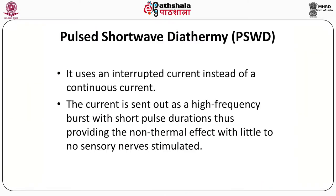The second mode of shortwave diathermy is pulsed shortwave diathermy (PSWD), which uses interrupted current instead of continuous current. The interrupted current is sent out as a high-frequency burst with short pulse duration, providing non-thermal effects with little to no sensory nerve stimulation.